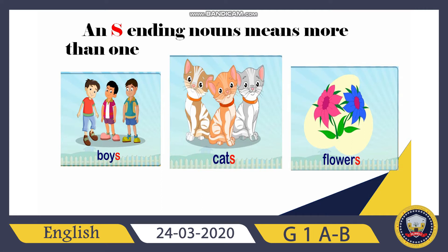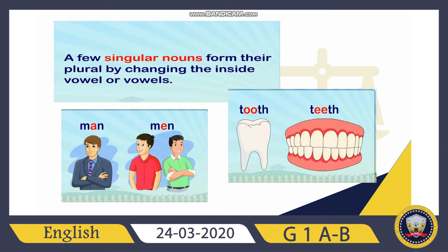How many boys can you see here? Very good — three boys. We can't say 'three boy,' we must say 'three boys.' And how many cats can you see? Three cats — more than one cat, so we add an 's': cats. And how many flowers do we have? Two flowers — we can't say 'two flower,' we say 'two flowers.'